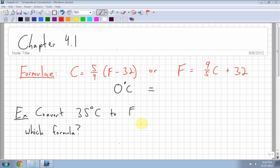Chapter 4.1 is basically conversions dealing with Celsius and Fahrenheit. So here I have the two Celsius and Fahrenheit formulas written down. These are given to you on your formula sheets, but you might want to jot them down just in case.